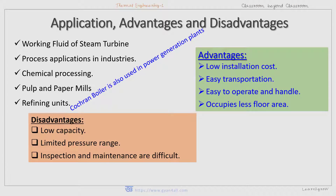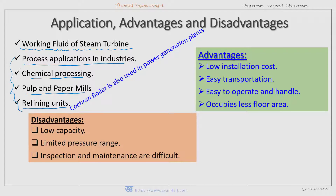Now, the applications, advantages, and disadvantages of the Cochrane boiler. The main application is that the steam produced is used as a working fluid for steam turbines. It also has process applications in industries such as chemical processing, pulp and paper mills, and refining units — all of these use process steam.